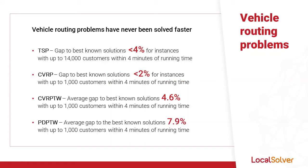First, let me talk about routing problems which have never been solved faster. On the traveling salesman problem, the gap to the best-known solution is inferior to 4% for instances with up to 14,000 customers within 4 minutes of running time. On the capacitated vehicle routing problem, the gap to the best-known solutions is inferior to 2% for instances with up to 1,000 customers within 4 minutes of running time.